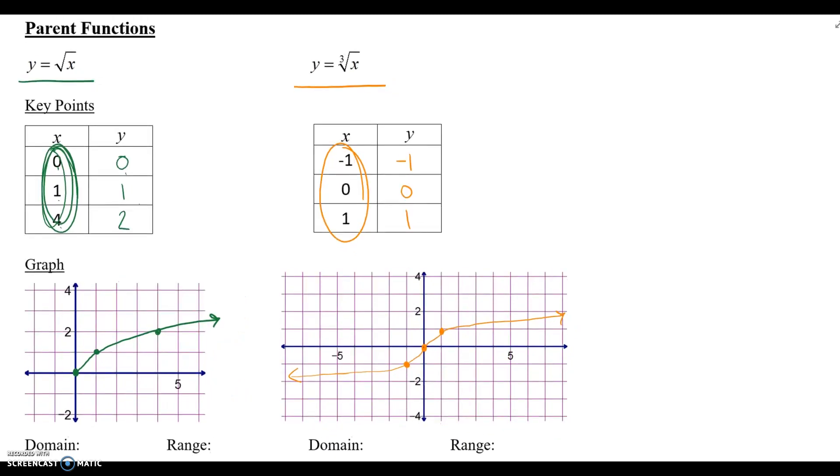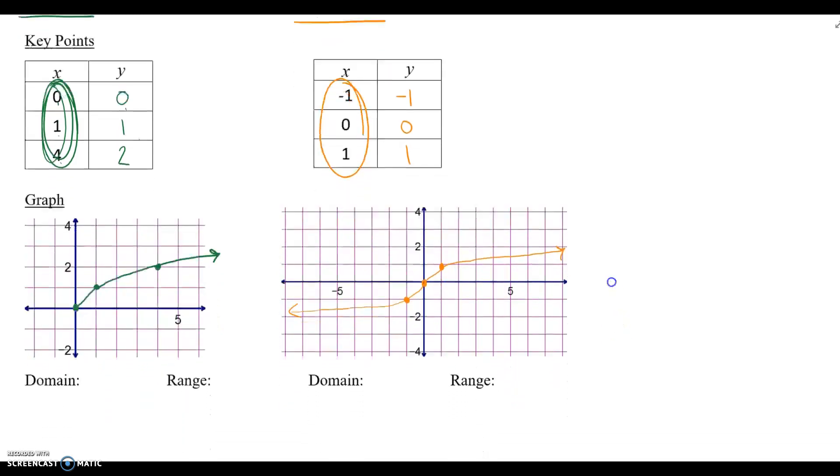For the cubed root, cubed root of negative 1 is negative 1, cubed root of 0 is 0, and cubed root of 1 is 1. And when you plot your points, it might not be super intuitive on how the graph looks, but I believe I did graph it for most of my classes, if not all. So you guys might know what it looks like.